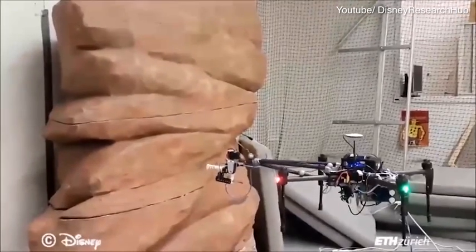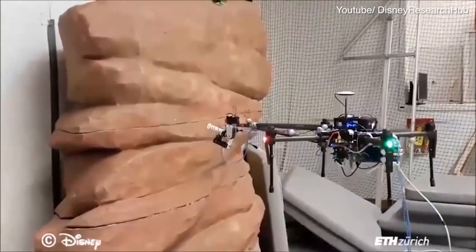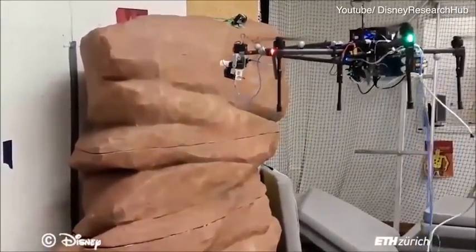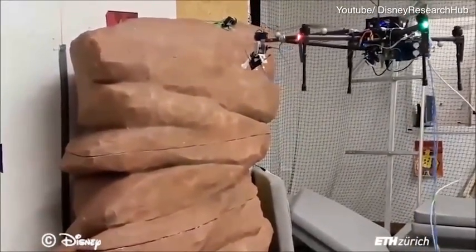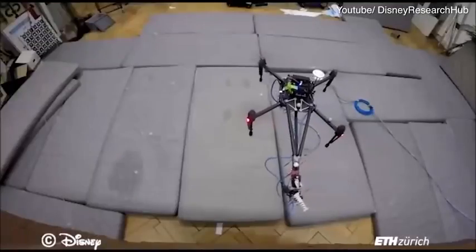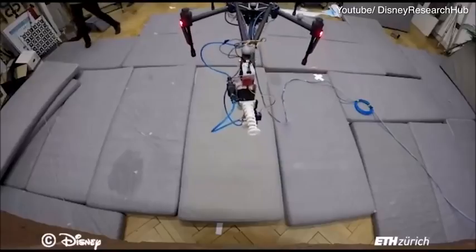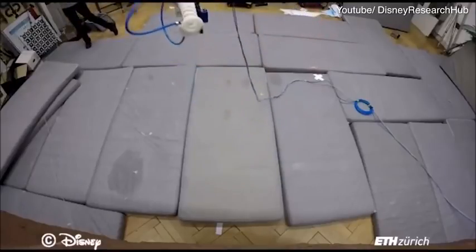The UAV then autonomously flies the trajectory generated in the task planning stage. The pan-tilt unit is directed to spray the surface using the target spray points generated in the task planning stage. The UAV maintains its pose estimate by localizing against the pre-scanned 3D model of the target surface.